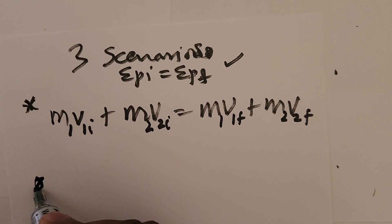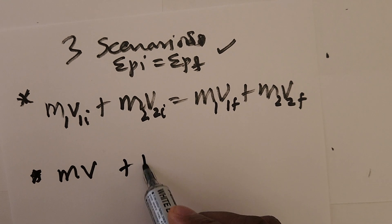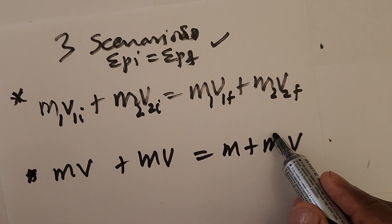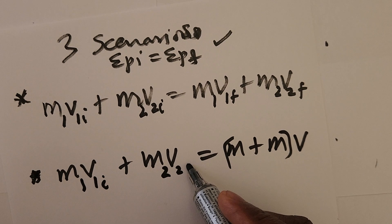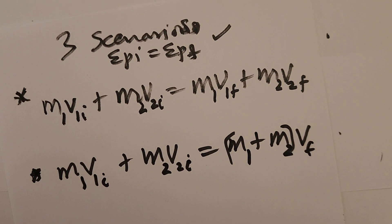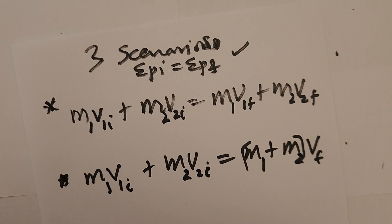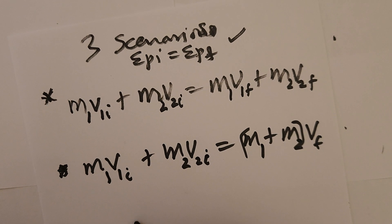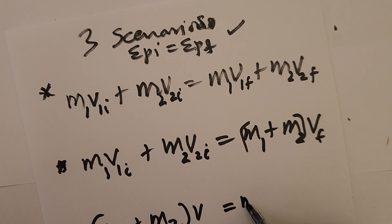Scenario two: the objects are separate before the collision but combine after. The equation becomes M1V1i plus M2V2i equals (M1 plus M2)V_f. An example is a bullet that gets stuck in a block — they then move together with a common final velocity V_f.